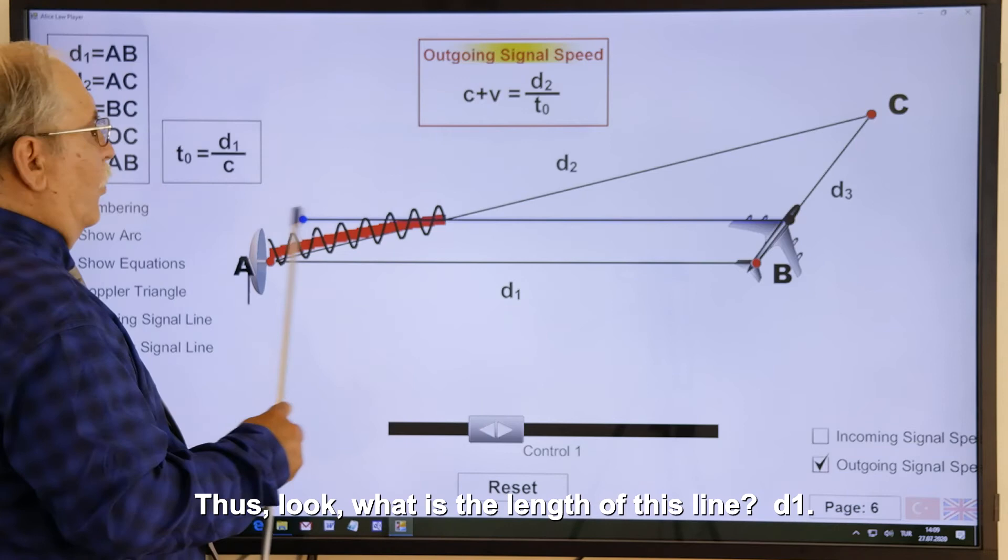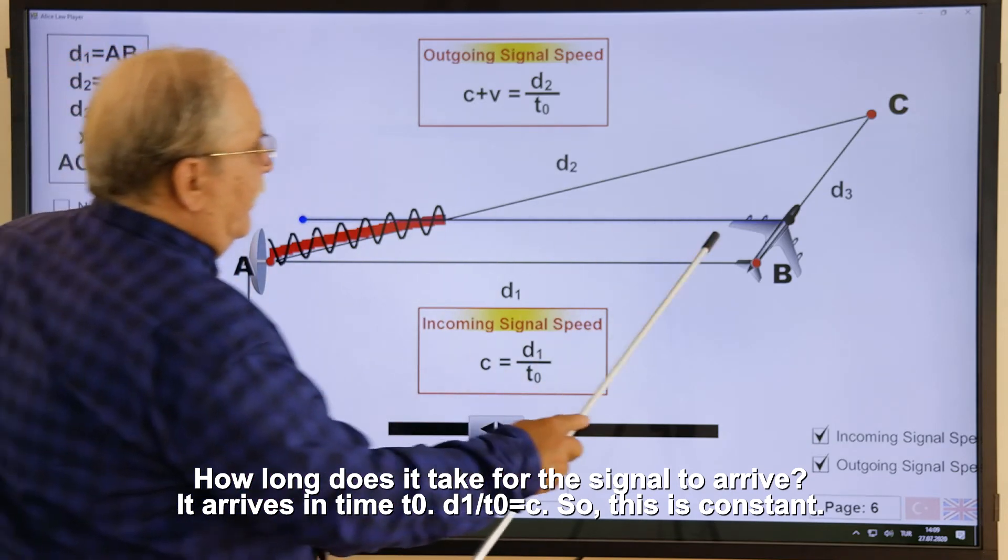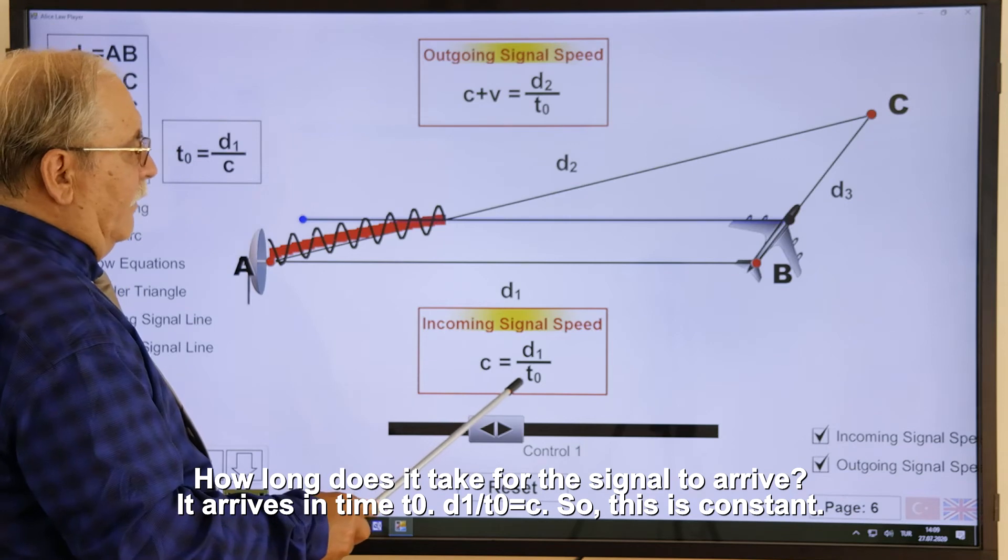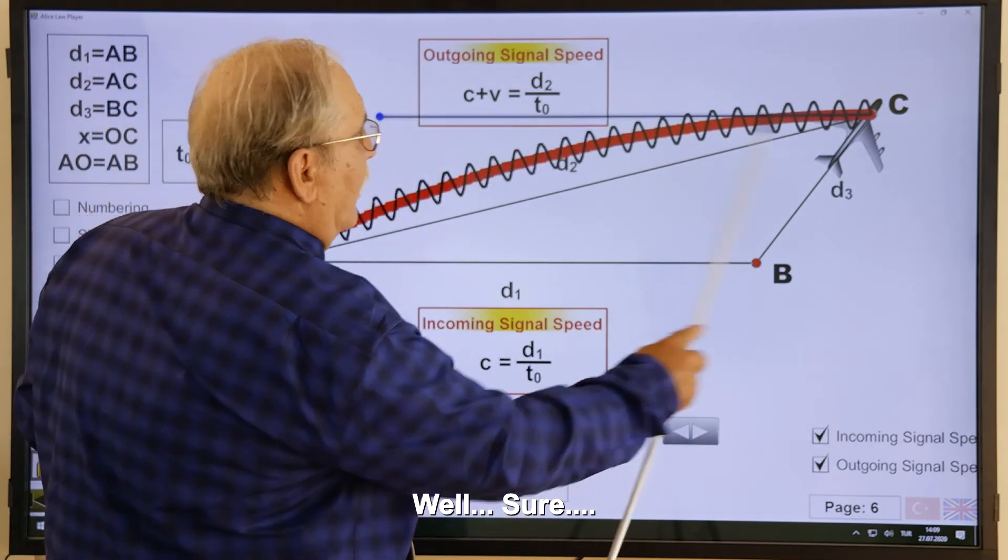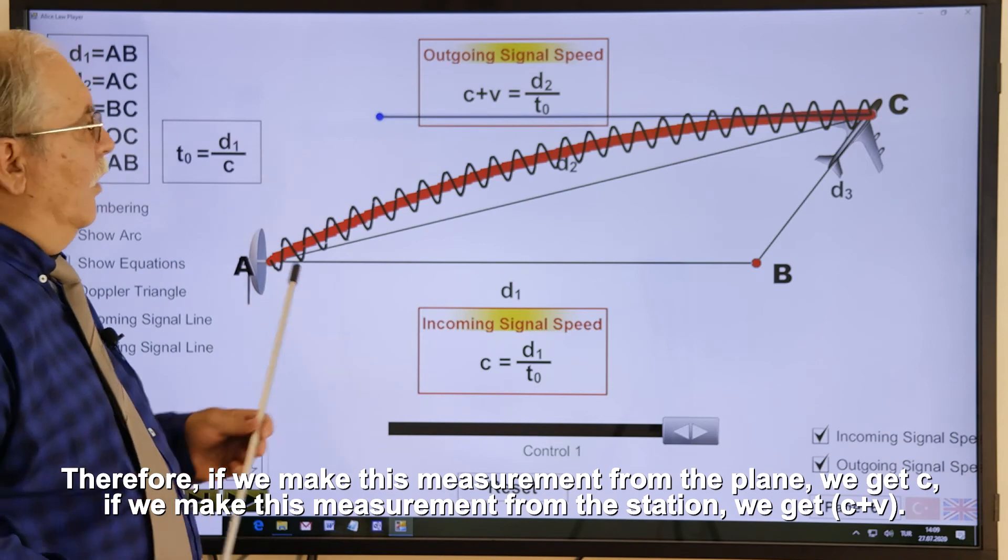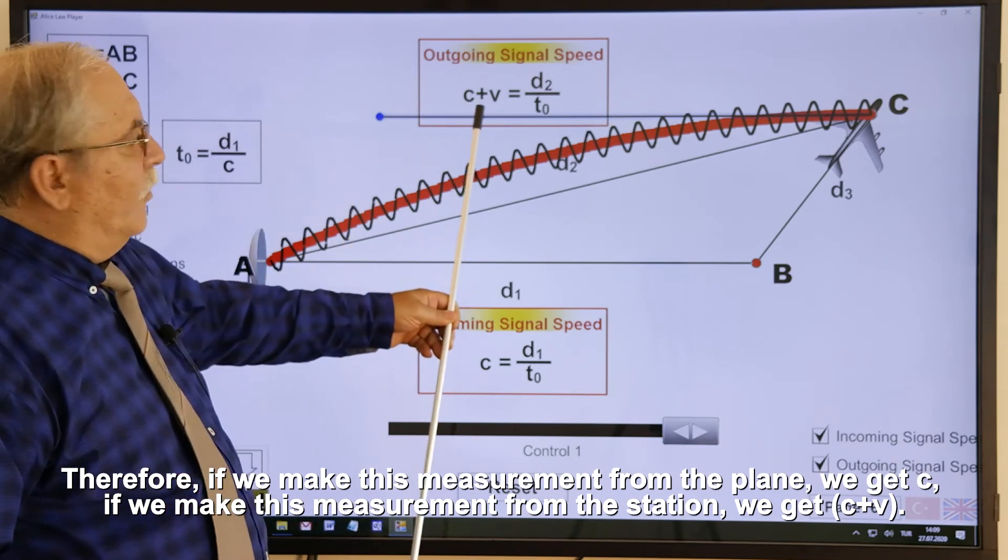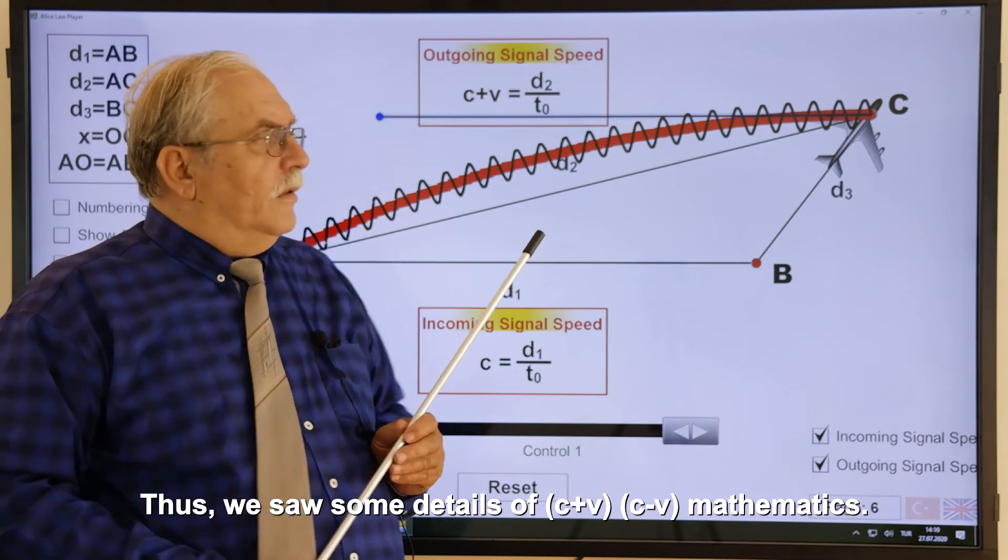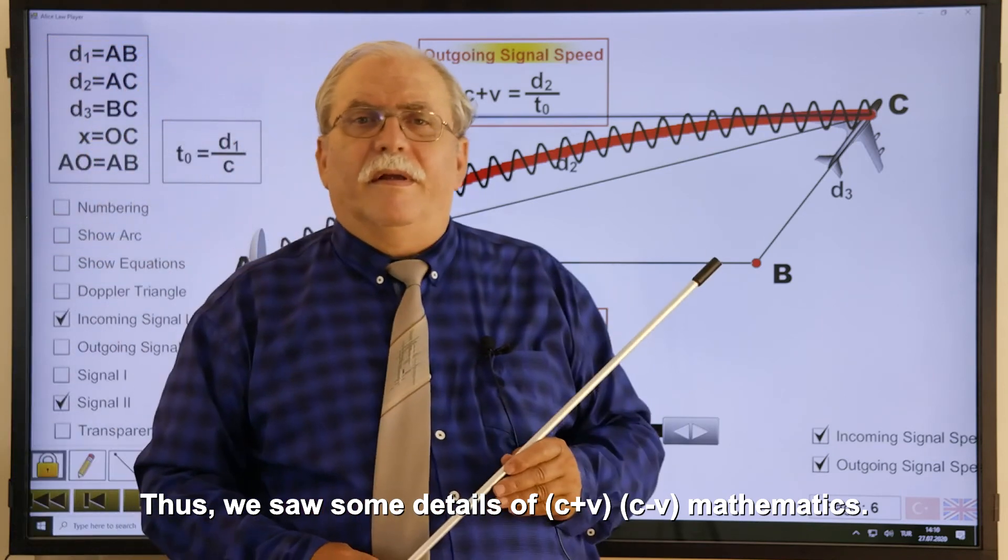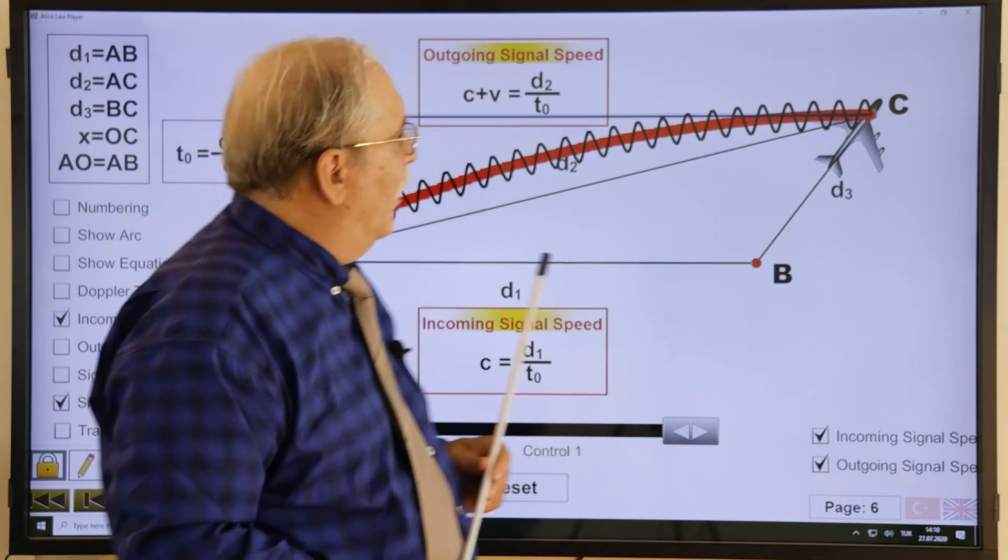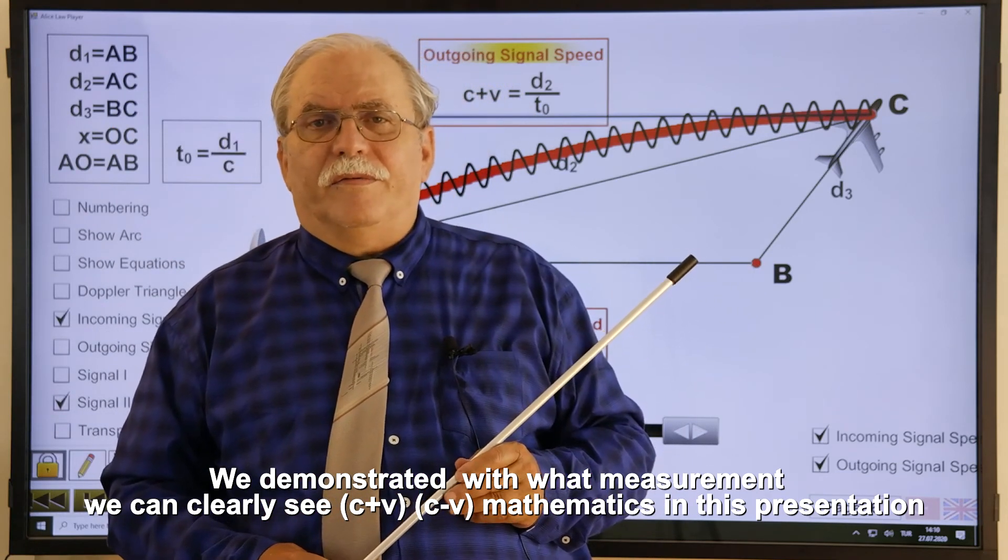Let's see more clearly. To the reference system of the plane, the signal arrives by following this line. That line, AC line, is the line of the outgoing signal for this station. It is something valid for that station. It is not valid for the plane. This is the line that is valid for the plane. Thus, look, what is the length of this line, D1? How long does it take for the signal to arrive? It arrives in time T0. D1 divided by T0 equals C. So, this is constant. Therefore, if we make this measurement from the plane, we get C. If we make this measurement from the station, we get C plus V. Thus, we saw some details of C plus V, C minus V mathematics. We demonstrated with what measurement we can clearly see C plus V, C minus V mathematics in this presentation.